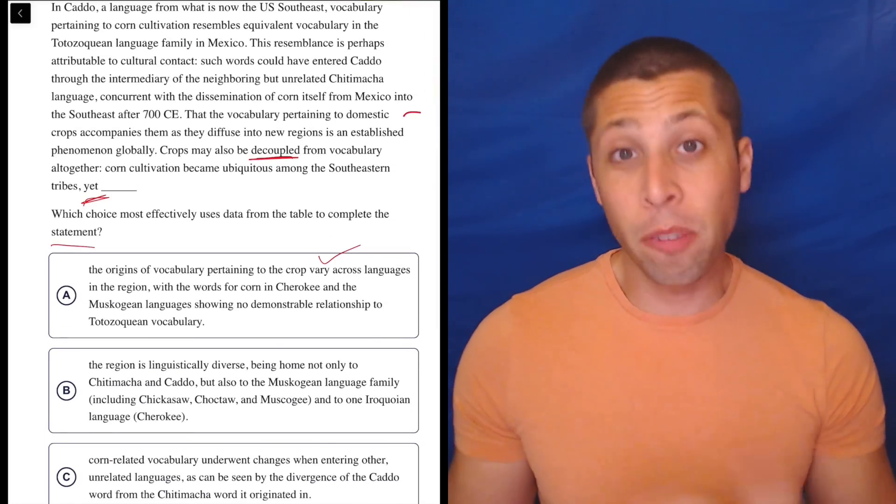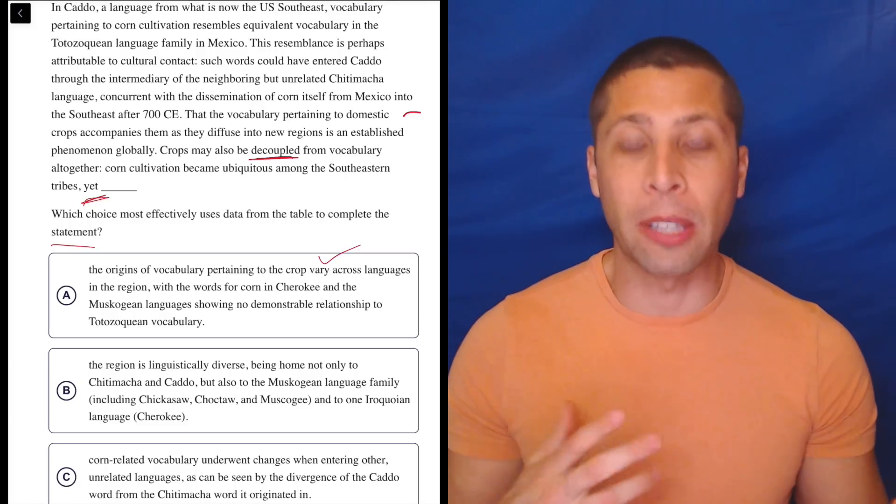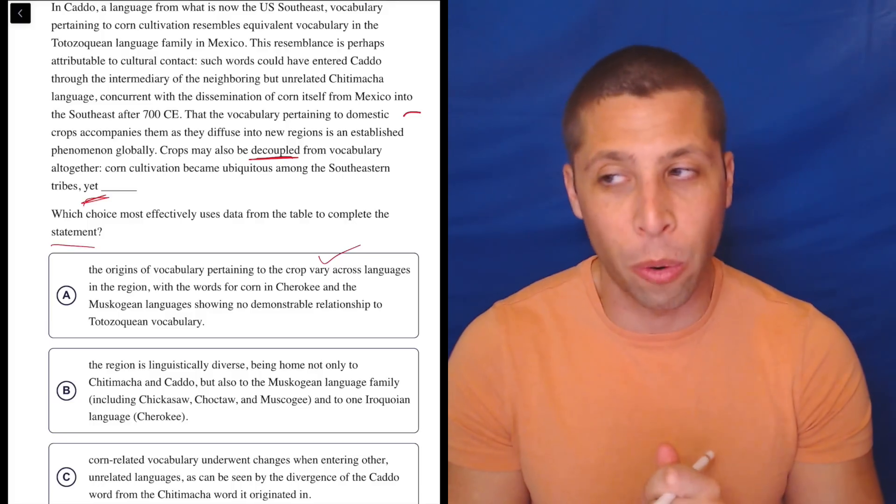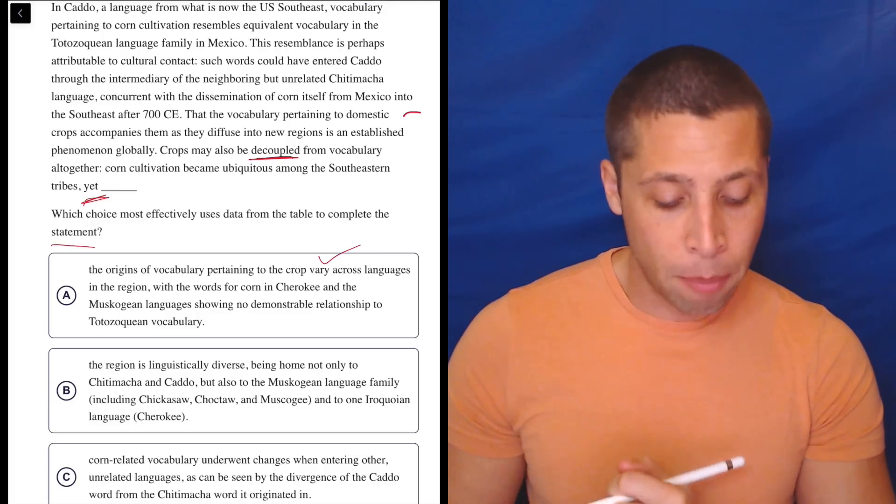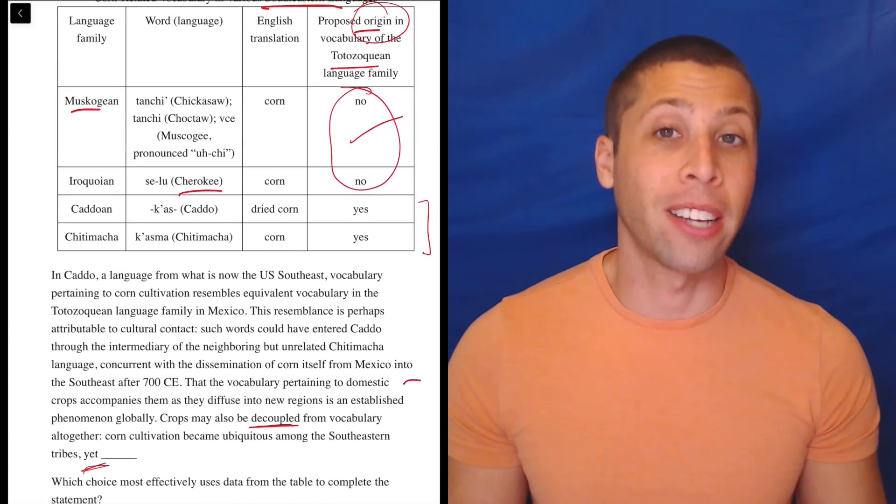Now, does that mean it's the right answer? Maybe, maybe not. I mean, it sounds pretty good, considering that we were talking about the origin of the words for corn, and this choice is talking about the origin for the words for corn. So I'm going to definitely keep it in. But notice how it's really just a much more elaborate summary of this entire right-hand column of the chart.